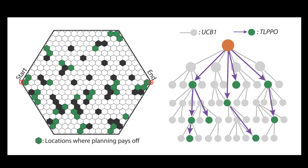The main difference between TLPPO and UCB1, the subsampling method included in POMCP, is that TLPPO only expands the tree at LPPOs and only in the direction of other LPPOs using the shortest path between them.